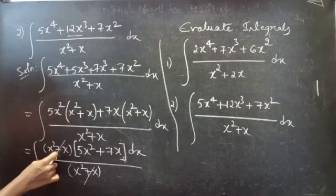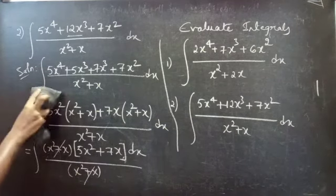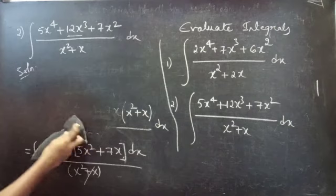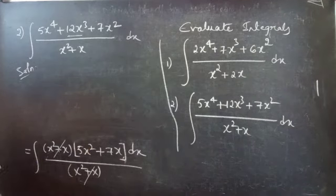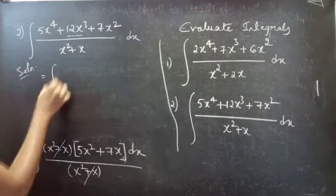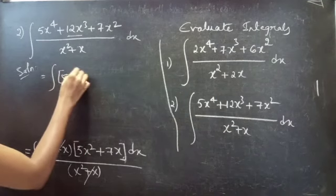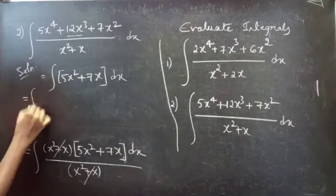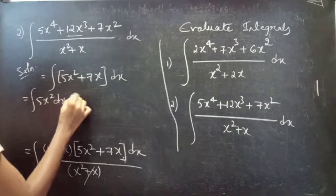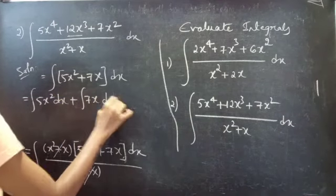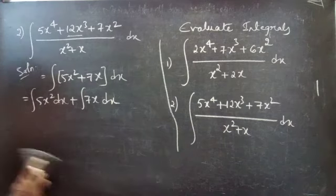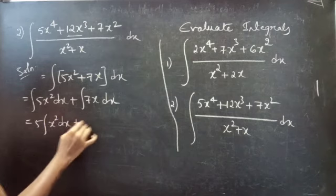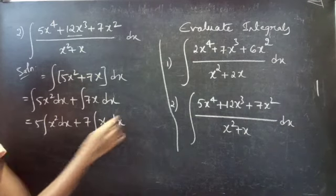Cancel x² + x from numerator and denominator. We get the integral of (5x² + 7x) dx. Split it as integral of 5x² dx plus integral of 7x dx. Take constants outside: 5∫x² dx + 7∫x dx.